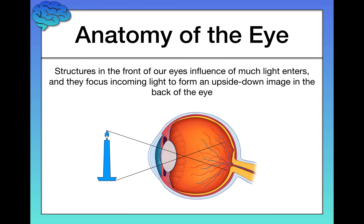Here's a bird's eye view of how vision works, starting with the anatomy of the eye. Structures in the front of our eyes influence how much light enters the eye, and they focus incoming light to form an upside-down image in the back of the eye. Whatever you're looking at, the whole world is actually upside down when it hits your eye. This shows the power of the brain — similar to how memory is reconstructive, not reproductive, vision is also reconstructive. You don't walk around seeing the world upside down; your brain reconstructs your experience consistently with reality. A lot of this processing is done in areas like the occipital lobe.